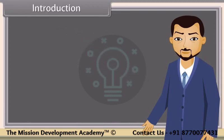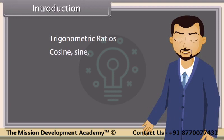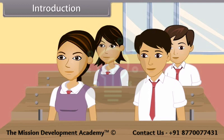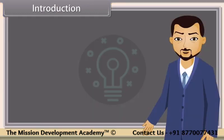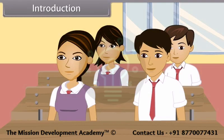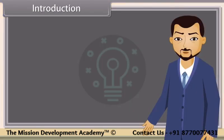You have probably met the trigonometric ratios cosine, sine and tangent in a right-angled triangle and have used them to calculate the sides and angles of those triangles. We define the cosine, sine and tangent as functions of all real numbers. These trigonometric functions are extremely important in science, engineering and mathematics.